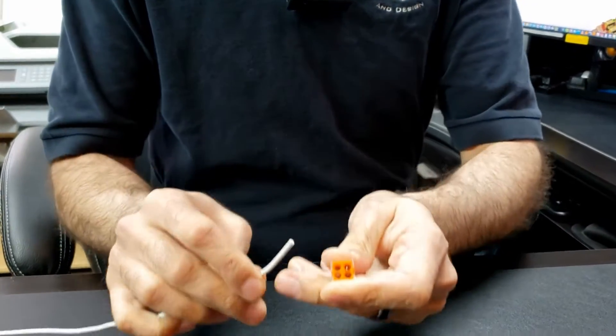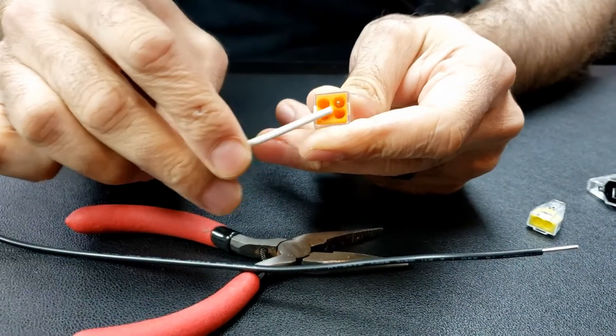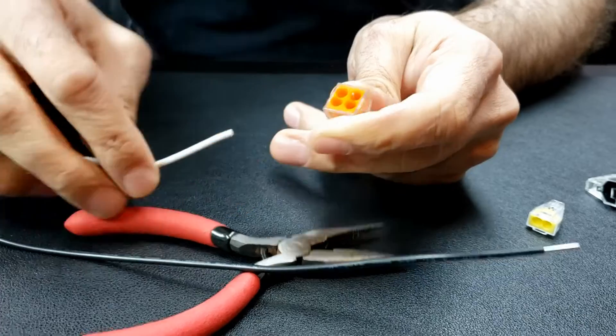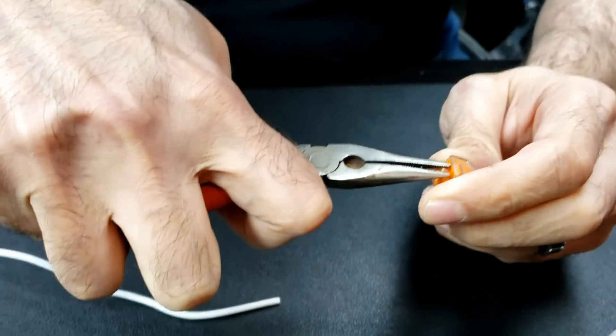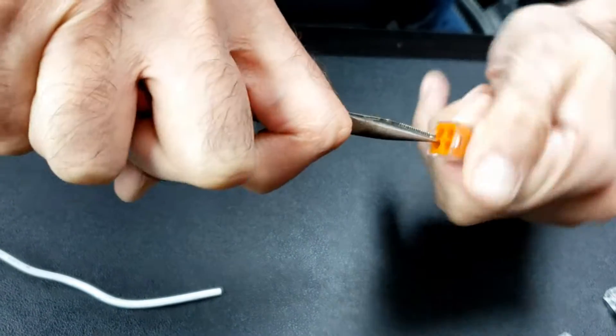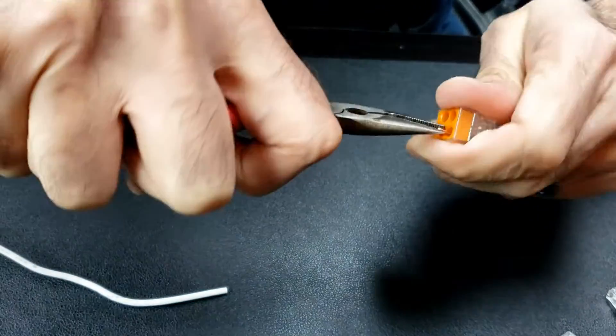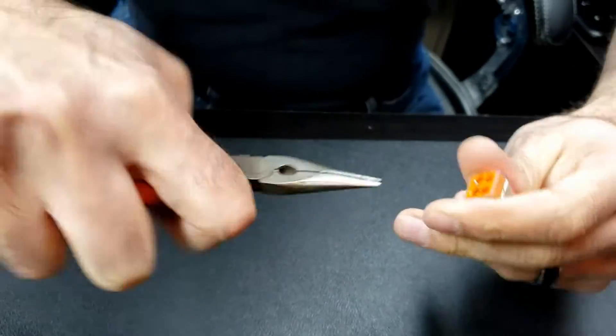There you go. If this happens, you need to pull that little slug out of there because it can make a short. Take some needle nose pliers, grab what's left of it, and keep spinning and pulling to get it the rest of the way out.